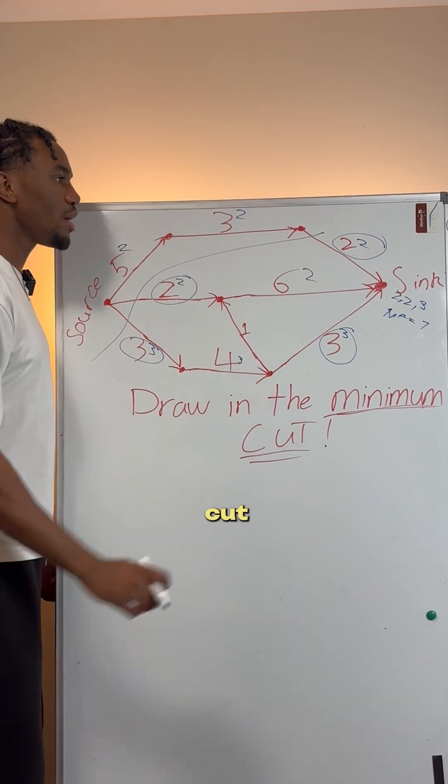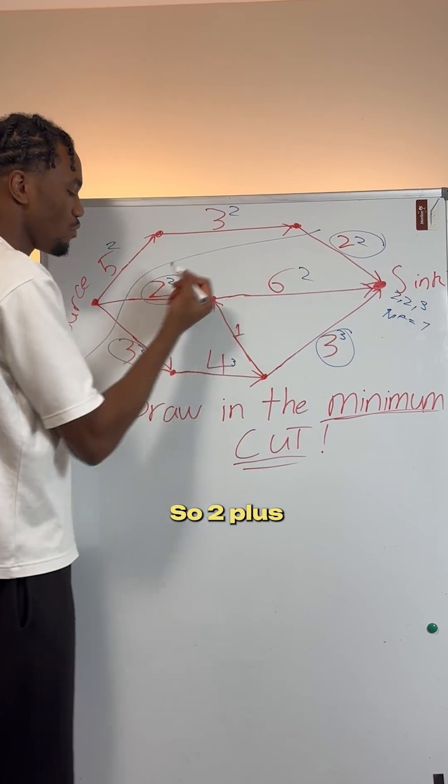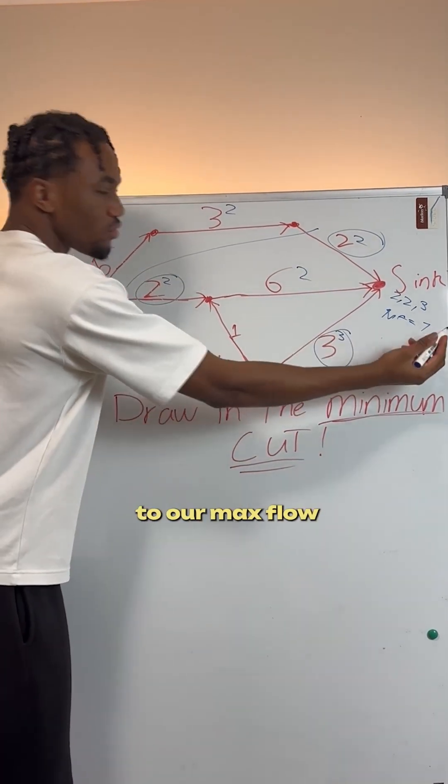And that's our minimum cut, right? And you can check it because minimum cut equals max flow. So two plus two plus three is equal to our max flow.